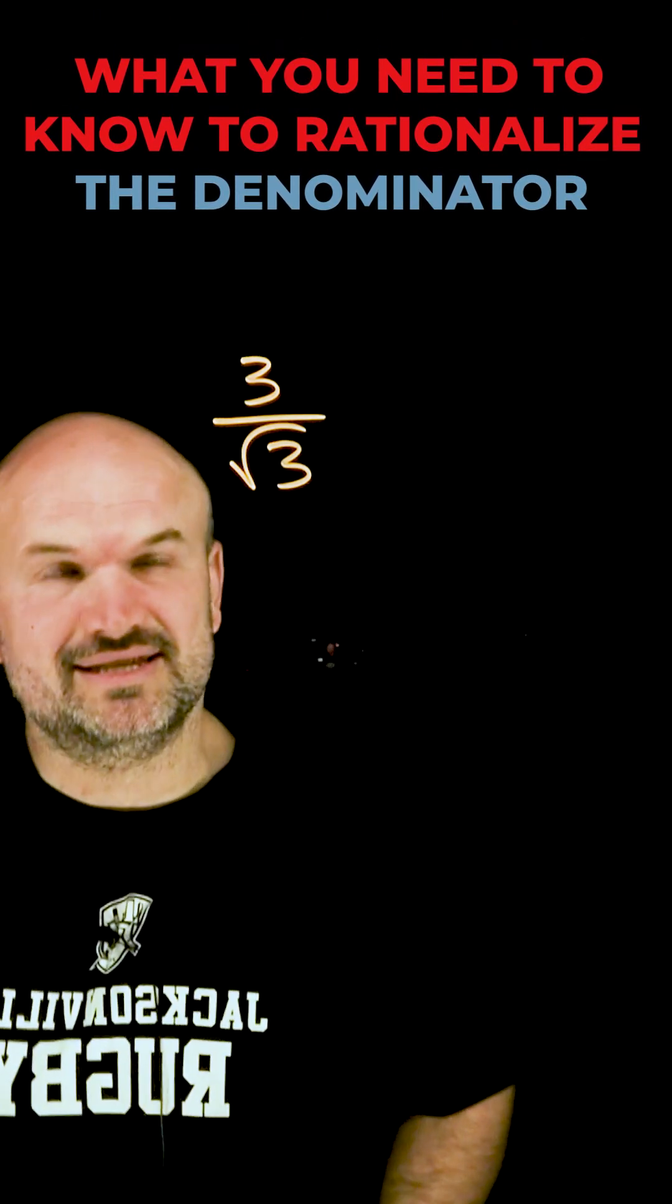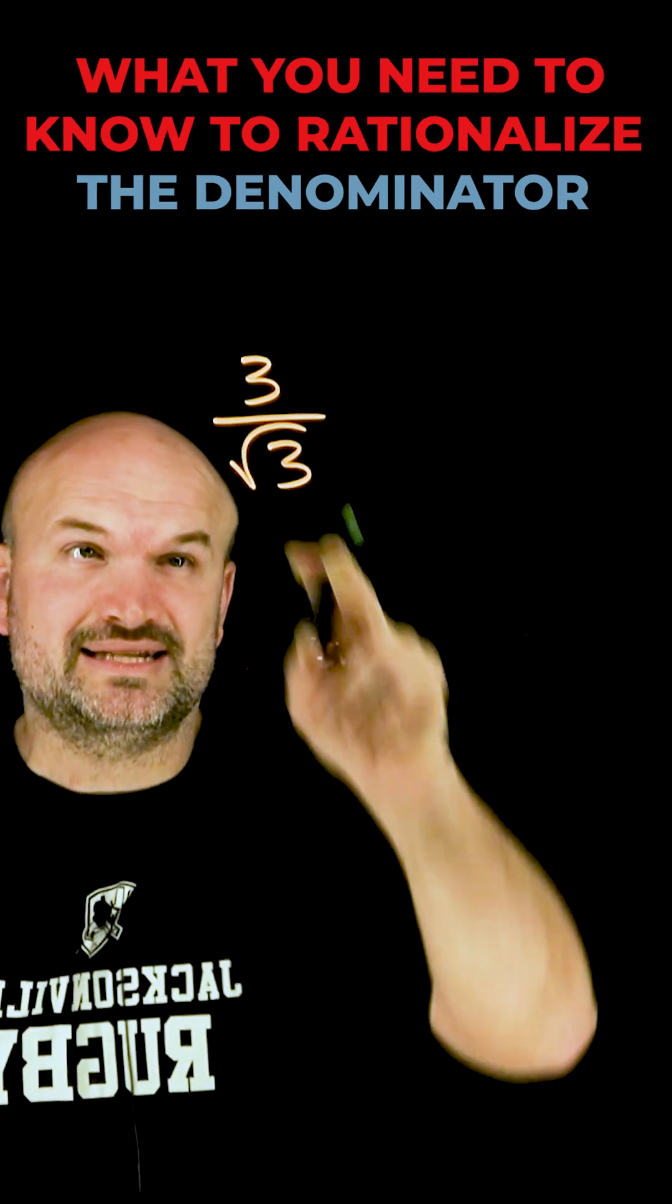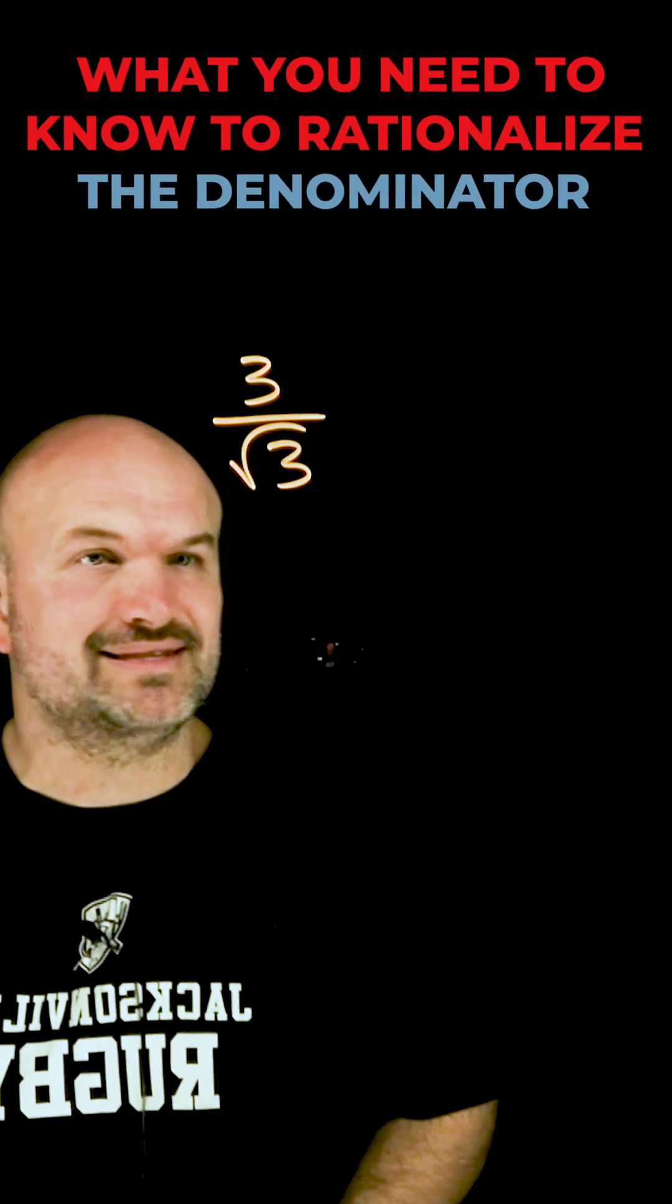A couple things you need to know to rationalize the denominator. When we want to rationalize the denominator with the radical, what we're looking at doing is eliminating the square root in the denominator.